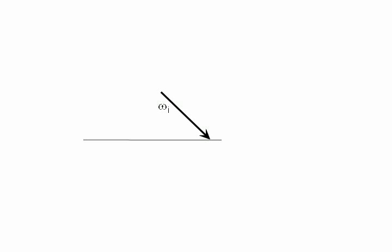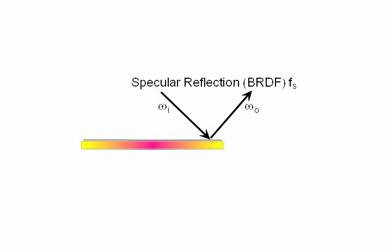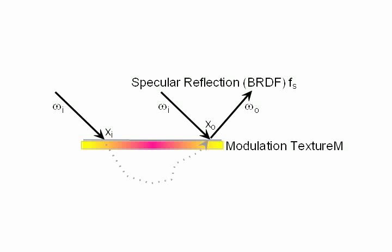We model specular reflection off the oil-air interface of the skin surface using a BRDF. And we model diffuse reflectance with a spatially varying modulation texture on top of a homogeneous subsurface scattering component. Similarly, we divide diffuse subsurface reflectance into two components. A diffuse albedo map captures high frequency color variation of the skin.